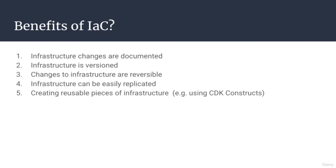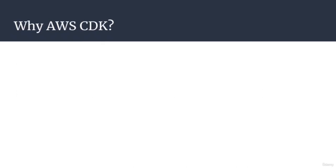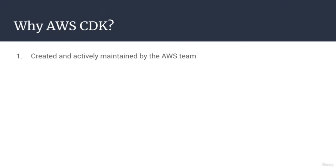Now that we've covered the benefits of having infrastructure as code in the first place, let's see what makes AWS CDK so unique. Why don't you just use a different framework for infrastructure as code? Well, first of all, AWS CDK is created and maintained by folks at AWS. This means that it is very well connected with AWS services, including the underlying CloudFormation service. From a risk management perspective, there should be zero risk that CDK will go away sometime soon.